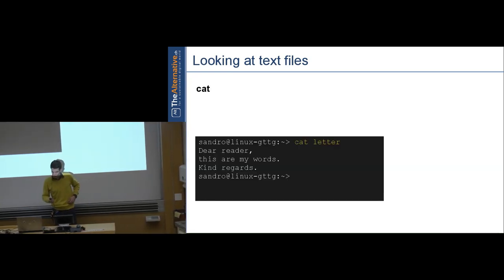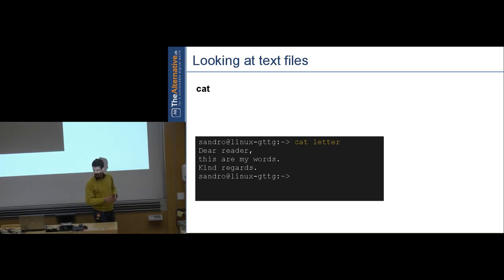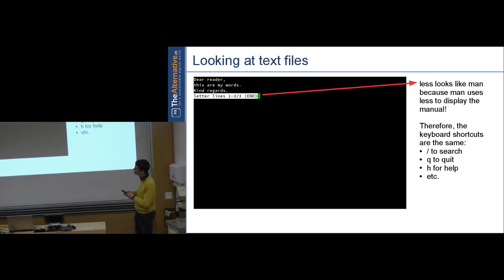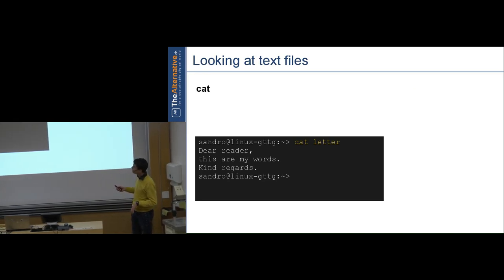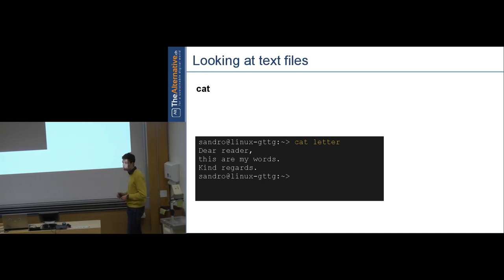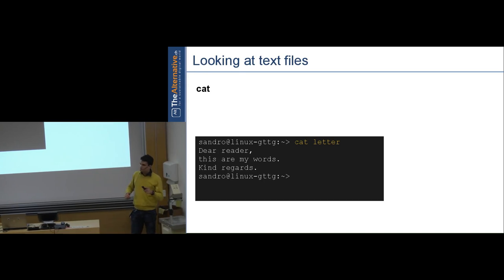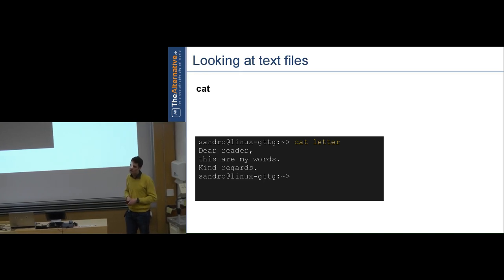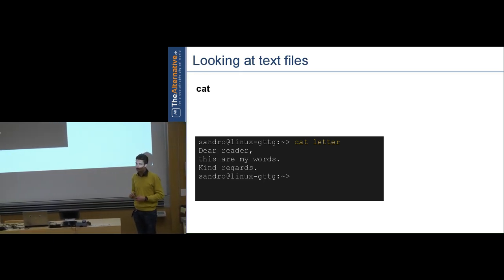'cat' is another way to view a file — it simply prints all the file's contents directly to the console as output. This is useful for redirecting output, which is a more advanced topic. Warning: if your file is 2 gigabytes and you 'cat' it, it will print endlessly. In that situation: Ctrl-C.